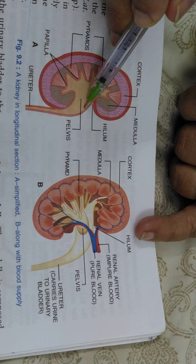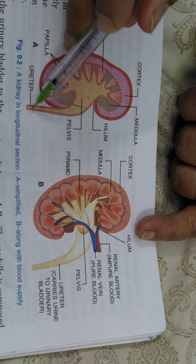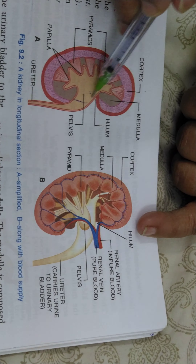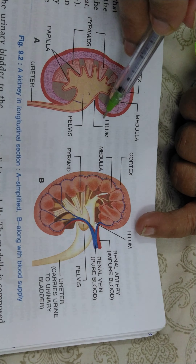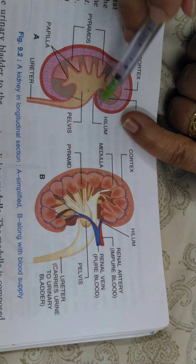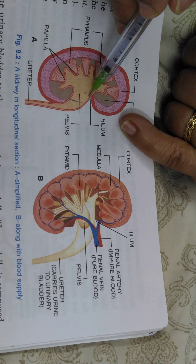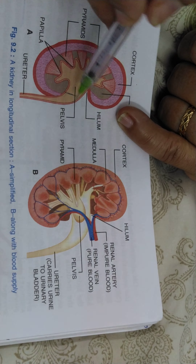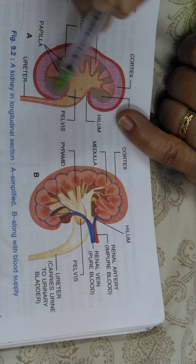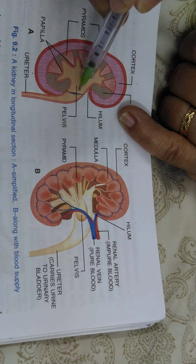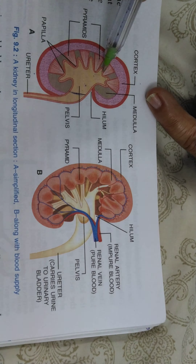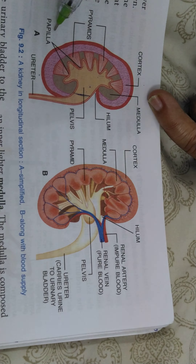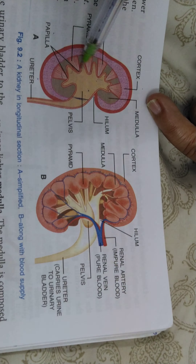The ureters, when they enter the center part of the kidney, are flattened and broad. This broadened part of the ureters is called the pelvis. The point where the ureters enter the kidney is called the hilum — it is the point where blood vessels enter and leave the kidney. This broader part of the ureters is called the pelvis.